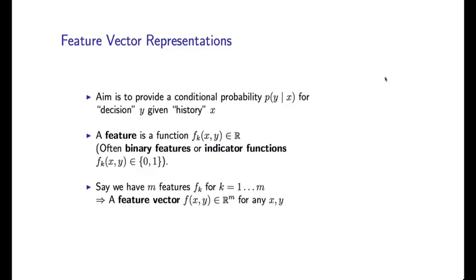A first key idea in log-linear models is going to be the idea of features, and what we'll call feature vector representations. I'll first give the abstract definition, and then we'll go through a particular example. In general, a feature is going to be some function. We're going to have features f1(x,y), f2(x,y), up to fm(x,y). We have little m features.